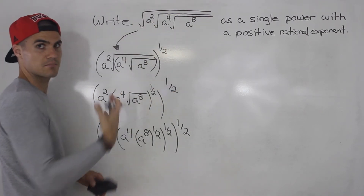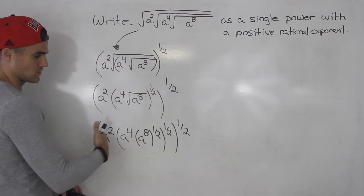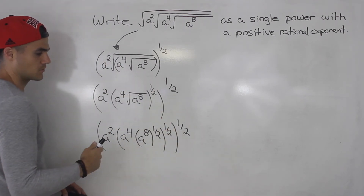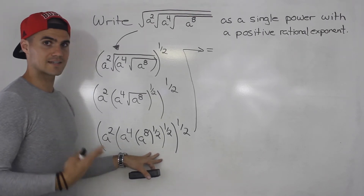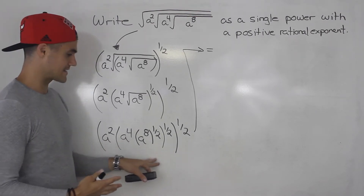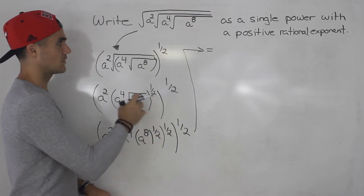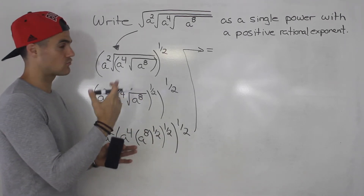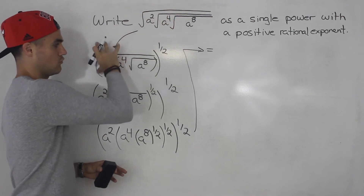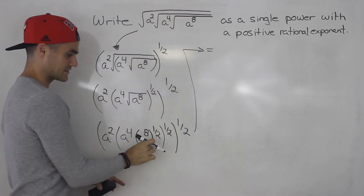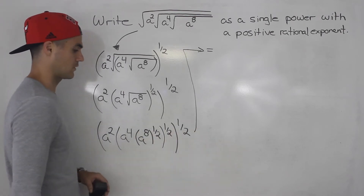My suggestion is to start with the outside radical first and then move your way in when switching square roots to rational exponents. Once you have everything as rational exponents, you can work from there. When simplifying, I like to start with the inside bracket first — change radicals from outside in, then simplify from inside out.